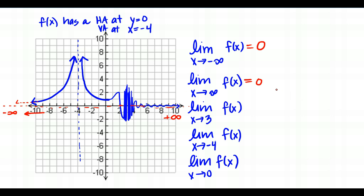Now the limit as X approaches 3: the function near 3 is also oscillating, but there's too much jumping back and forth — it looks like one blob right there at 3. Based on the graph, this limit does not exist. Just because a function is oscillating doesn't mean the limit definitely doesn't exist; it's only when there's too much oscillation near the particular value you're trying to take the limit at.